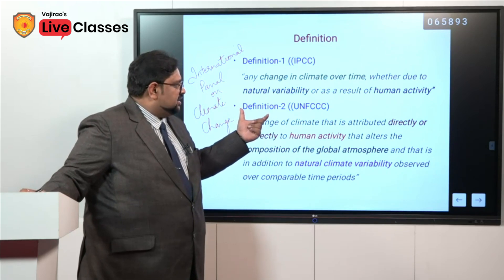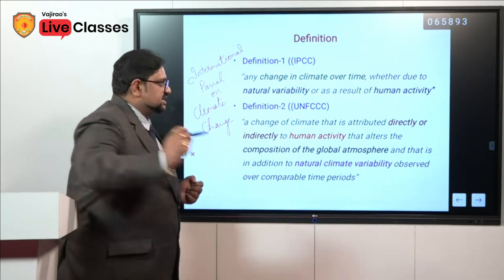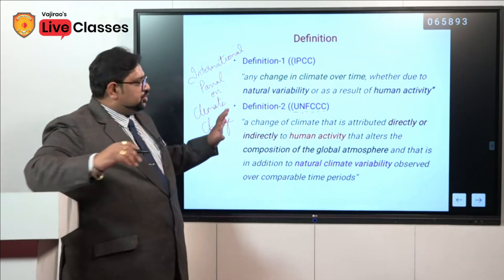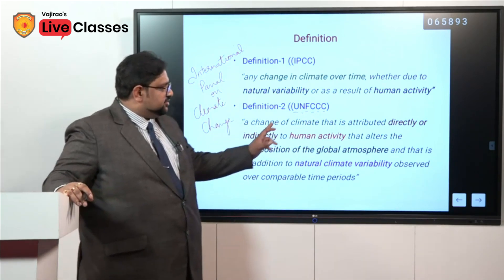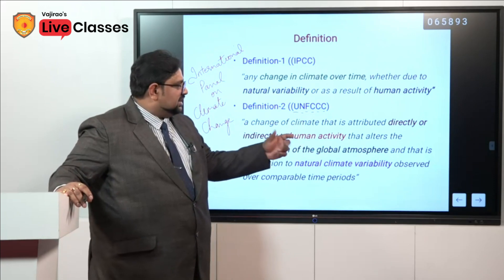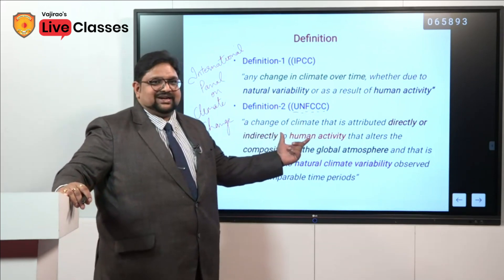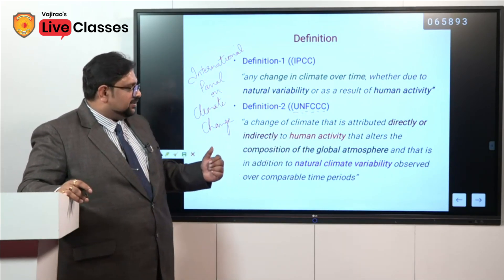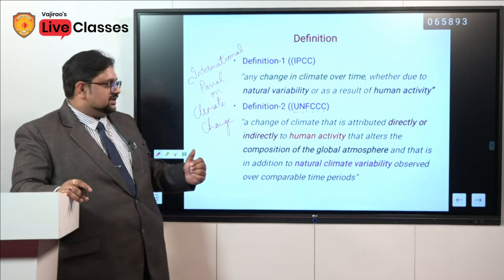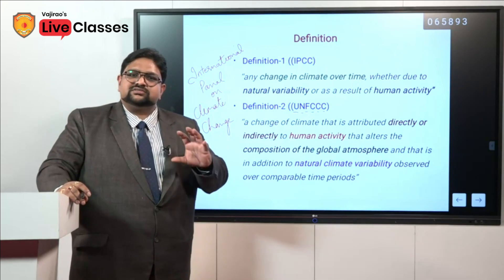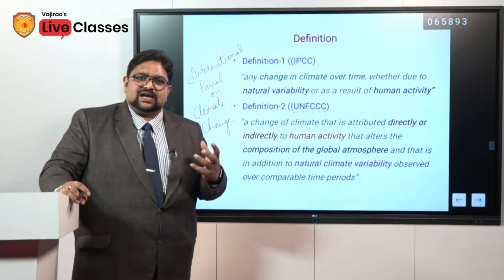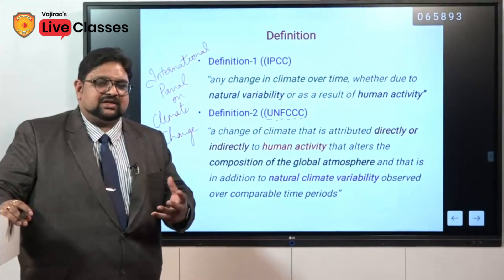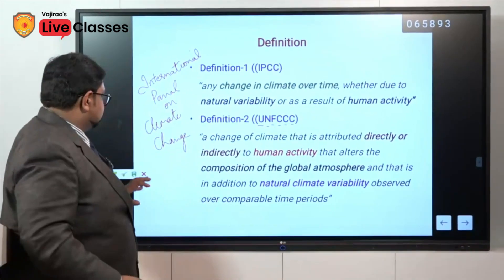The second definition is given by UNFCCC — the United Nations Framework Convention on Climate Change. UNFCCC defines climate change as the change of climate that is attributed directly or indirectly to human activities that alters the composition of the global atmosphere, in addition to natural climatic variation observed over a comparable time period. Both definitions stress on the change in climatic conditions which are natural but mostly enhanced by human beings.